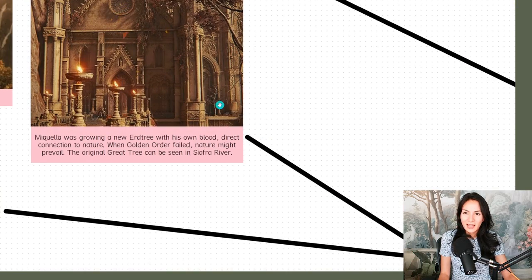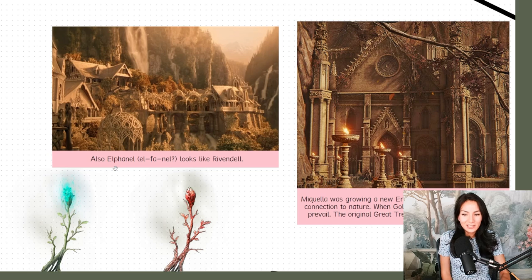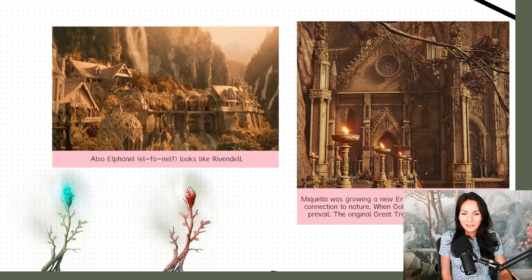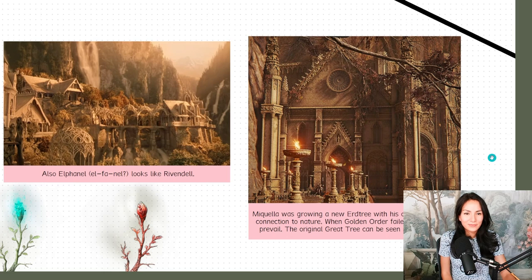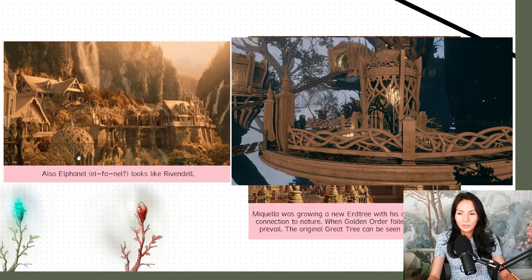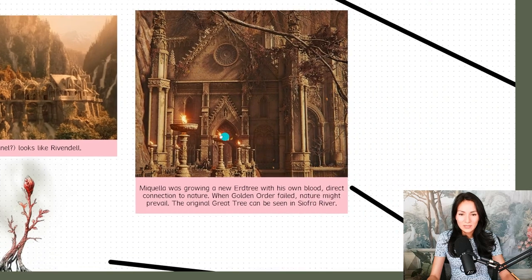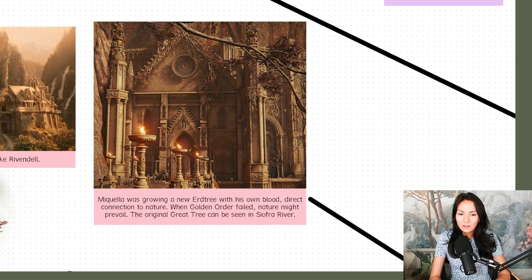Why would his blood become a plant? And why was his blood even feeding the Haligtree? The whole idea of him putting himself in the Haligtree was because he wanted to feed it and he wanted to grow it. So it doesn't grow like a regular tree. It grows with his blood. And I thought, that is a direct connection to nature right there. Elphael looks like Rivendell from Lord of the Rings.